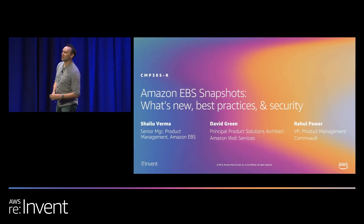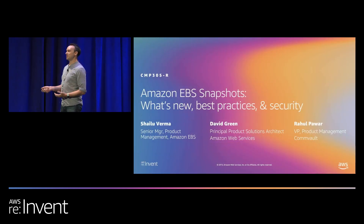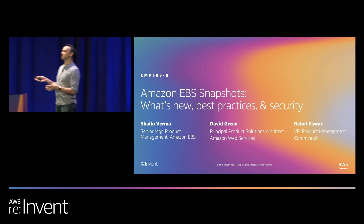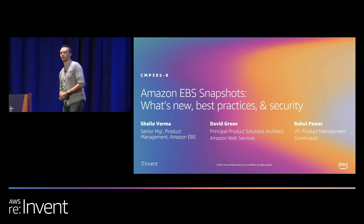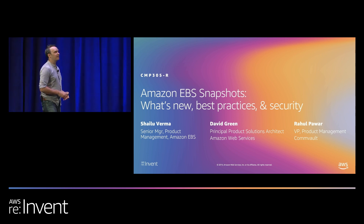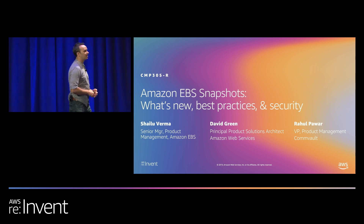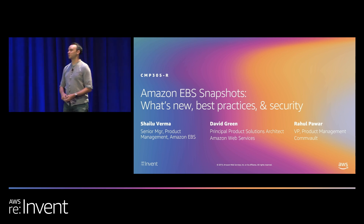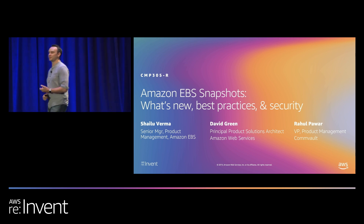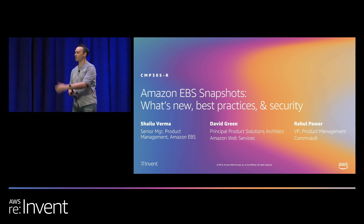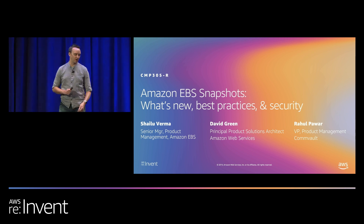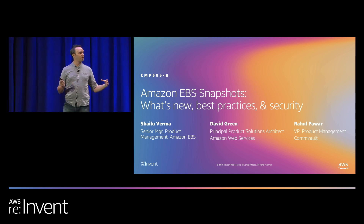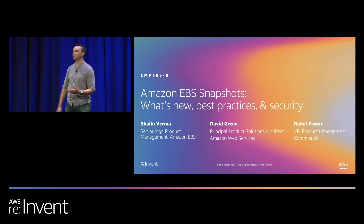We're here for EBS Snapshots. We're going to talk about what's new for Snapshots, some best practices, and how a partner of ours, Commvault, is leveraging some new features we launched to help make things easier for customers. My name is David Green, a principal product solutions architect on the AWS team. I'm joined by Shailu Verma, senior manager of product management on the EBS team, and Rahul Pivar, vice president of product at Commvault. We'll stay after to answer questions.